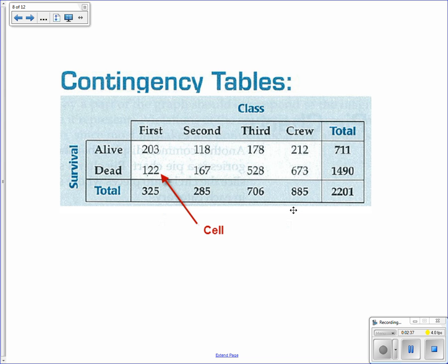A contingency table is where you're looking at a set of counts from two variables. In this case, alive and dead. And then in this variable is first class, second class, third class, and crew. Each of these values is called a cell. So those that died from first class are in this cell or 122. Or that were alive in the second class are 118 in those cells.